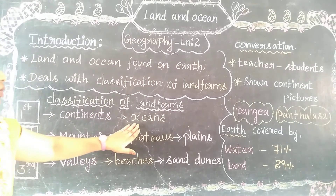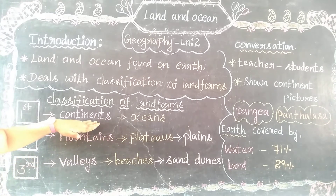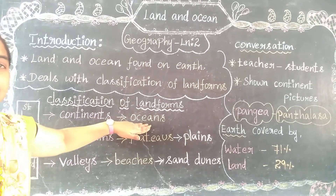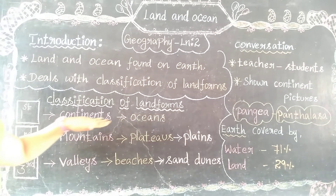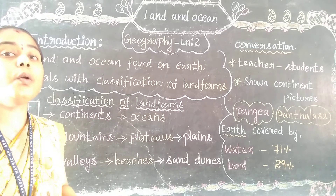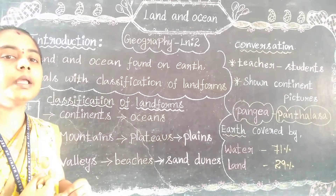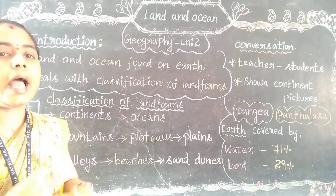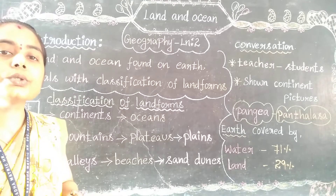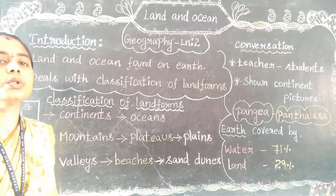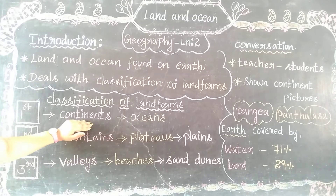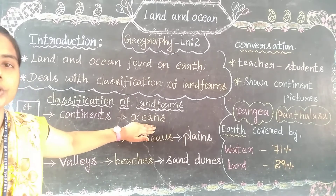Continents consist of oceans. We are having five oceans. What are the five oceans? Pacific Ocean, Atlantic Ocean, Arctic Ocean, Indian Ocean, and Southern Ocean. These are the five oceans we have.